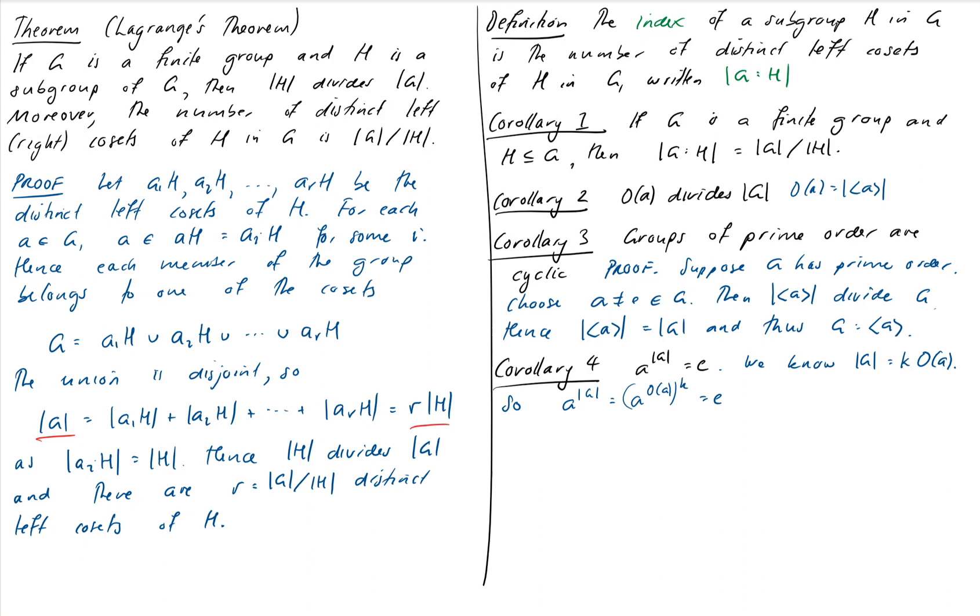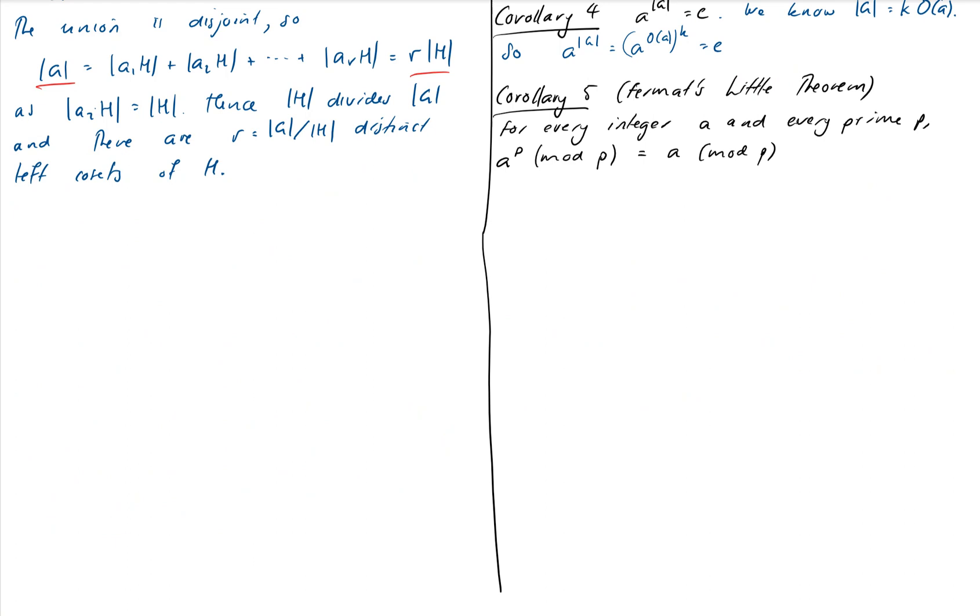We have one more corollary to state, and this one is probably the least obvious of all, but it's really interesting. Our final corollary is actually Fermat's Little Theorem, which is a theorem from number theory. This says that for every integer A and every prime P, A to the P mod P is equal to A mod P. So you don't actually need to calculate the prime power of A. If you want to know what A to the P mod P is, you can just take A mod P, and that will be the same thing. This one looks the least related to Lagrange's theorem of all of them, so we need to actually do some groundwork to actually find a group to make sense of this.